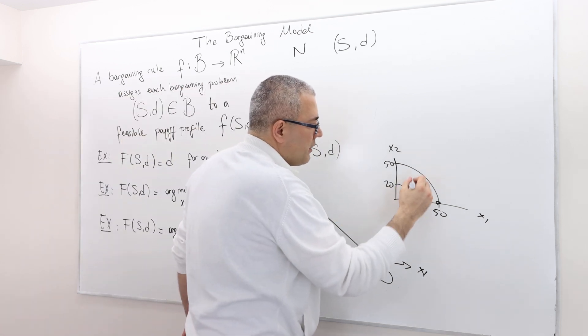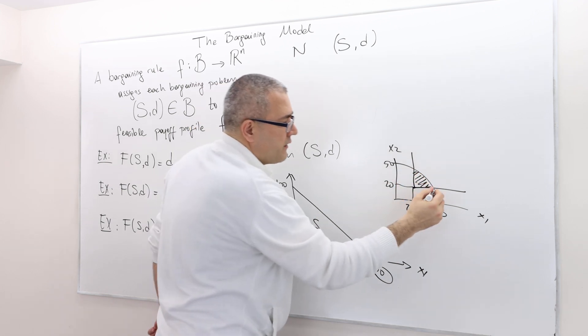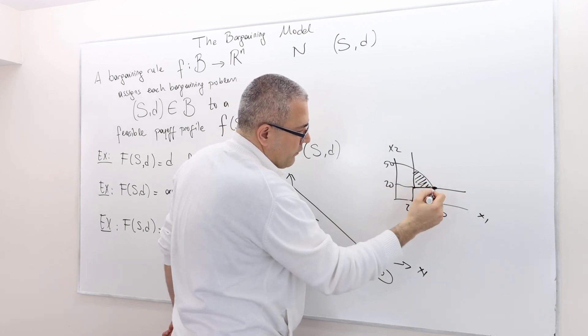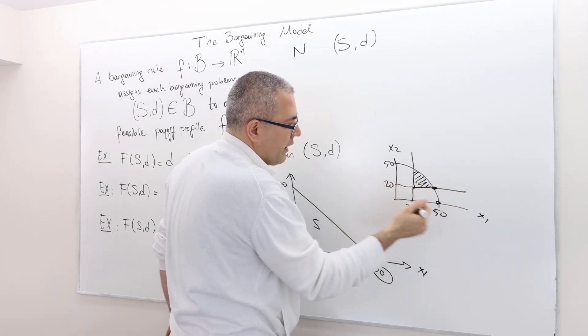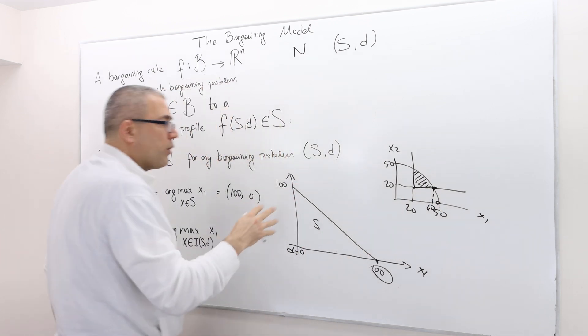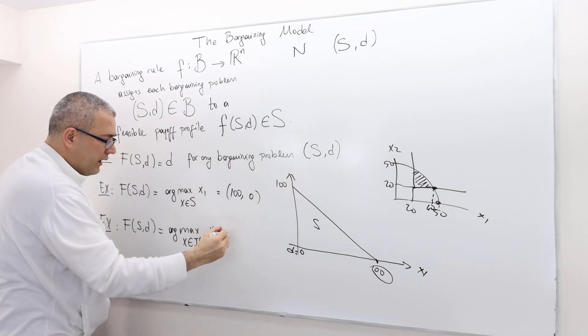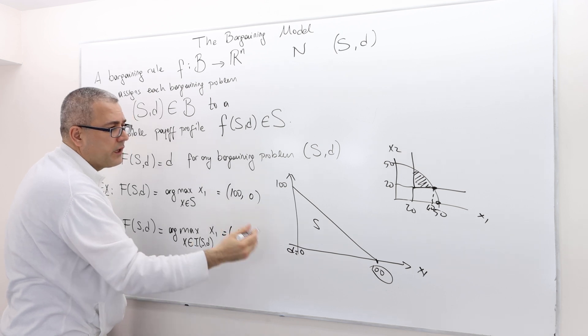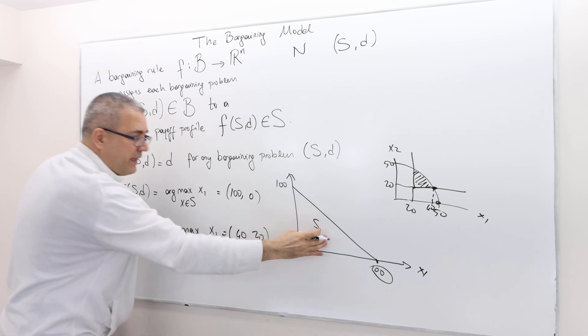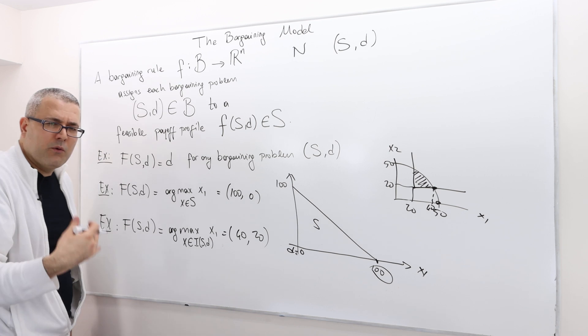However, in this problem, the individually rational payoffs are going to be in this region. What is this point? I think this is 20 for player two. What about player one? Let's say it's 40. So therefore, according to this problem, this solution is going to provide 40 to player one, 20 to player two. However, if this is the bargaining problem, this solution is going to be 100 and zero.